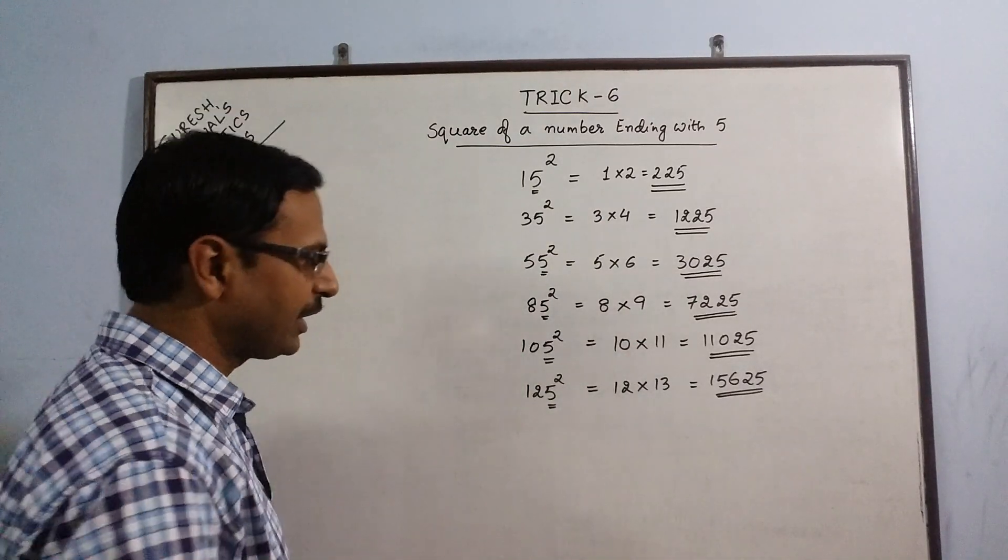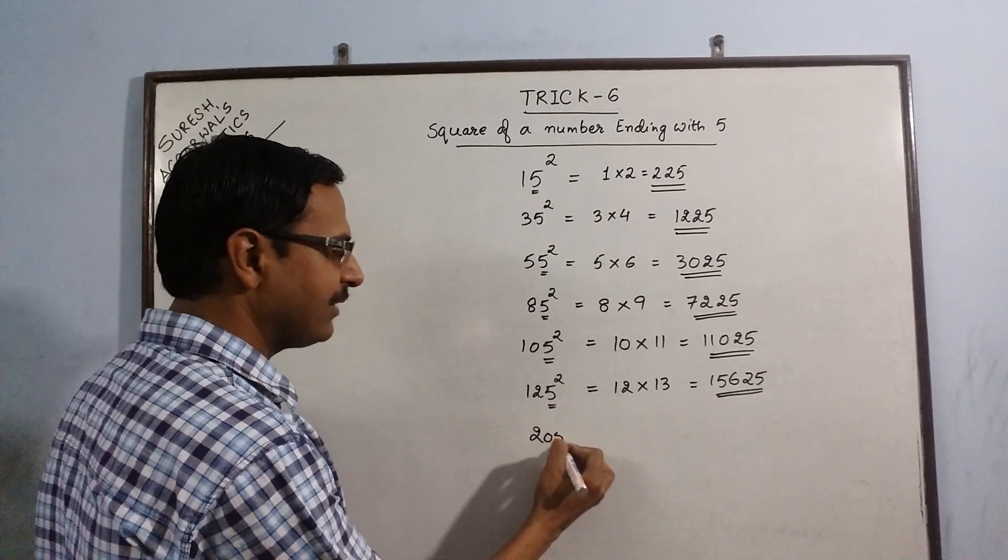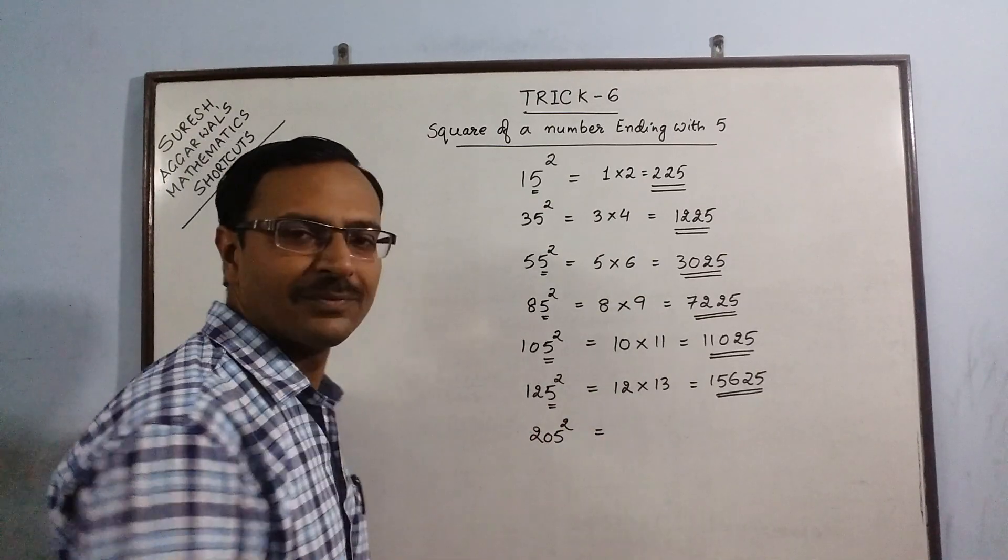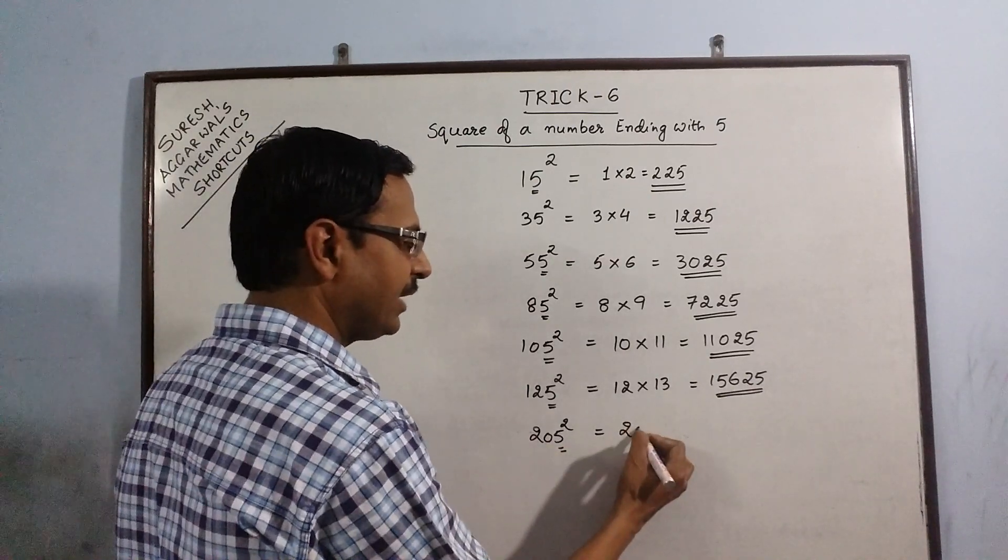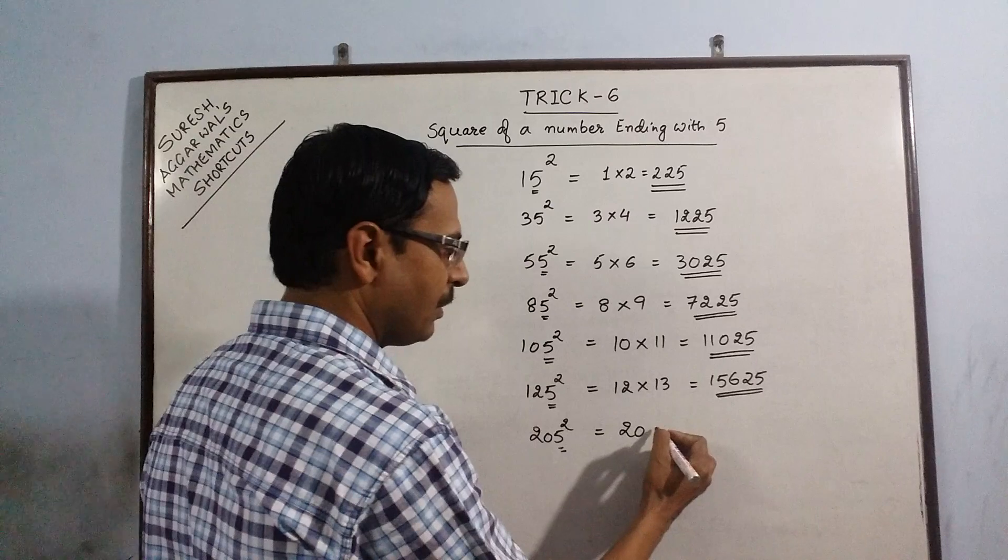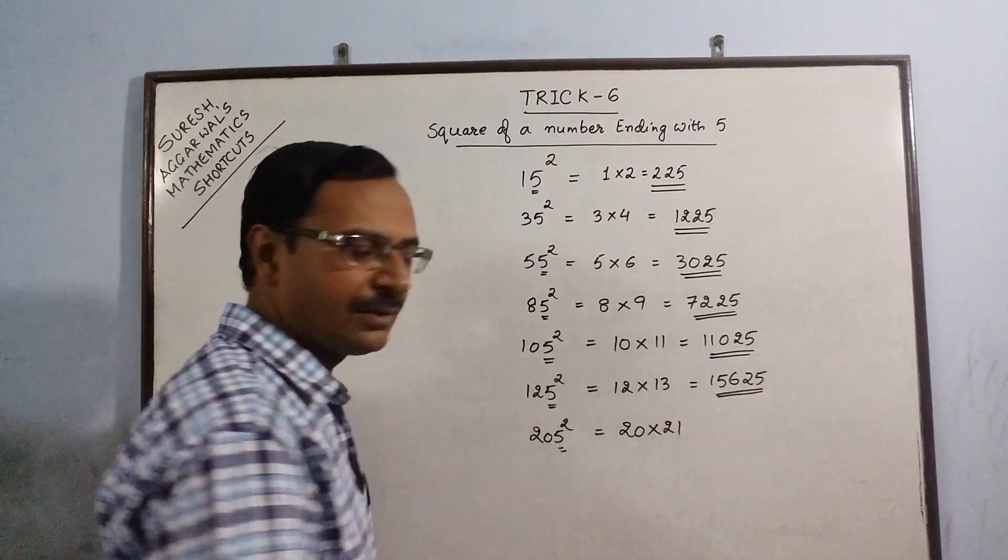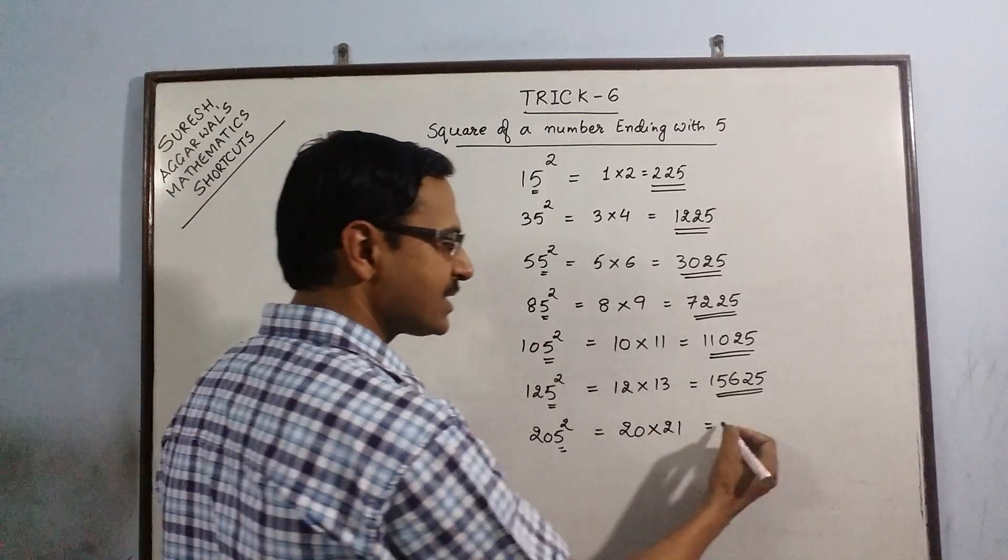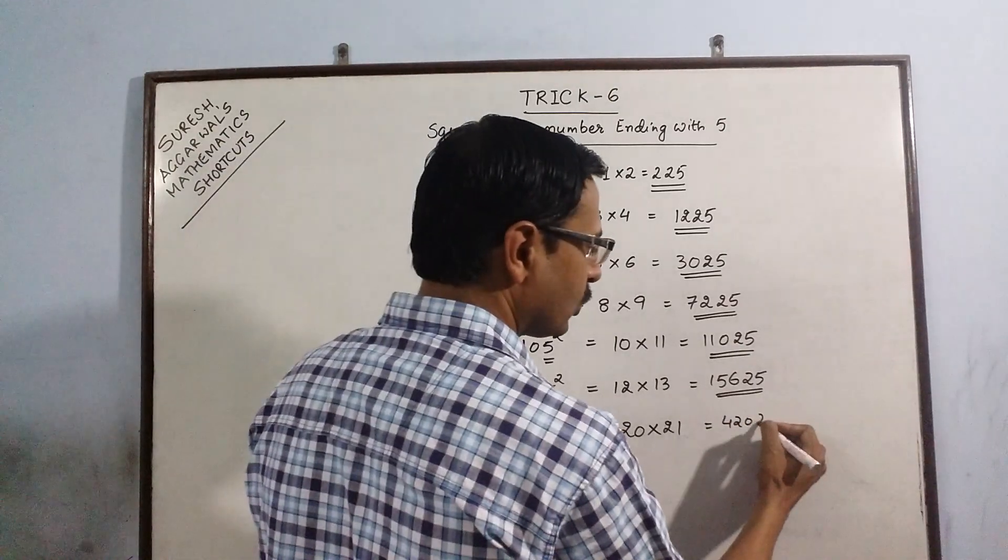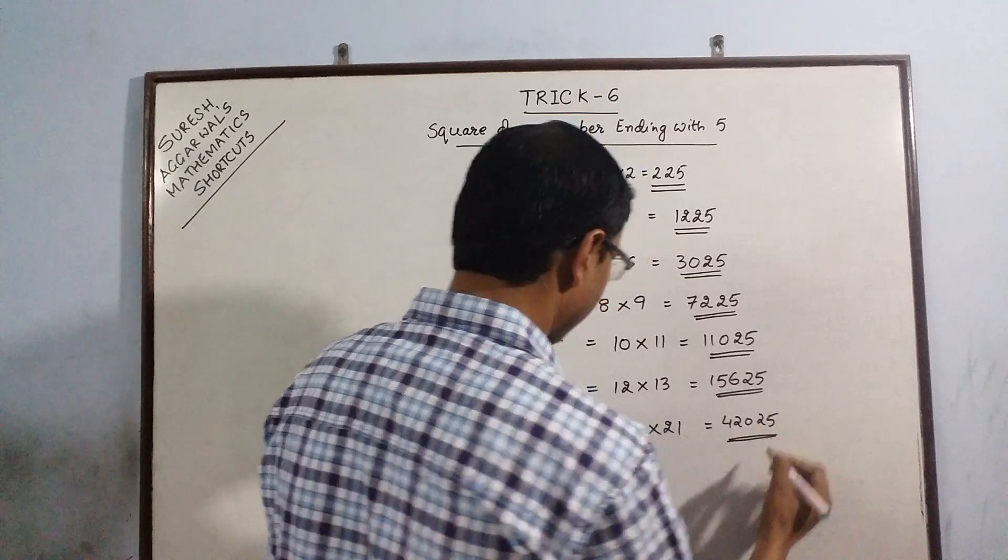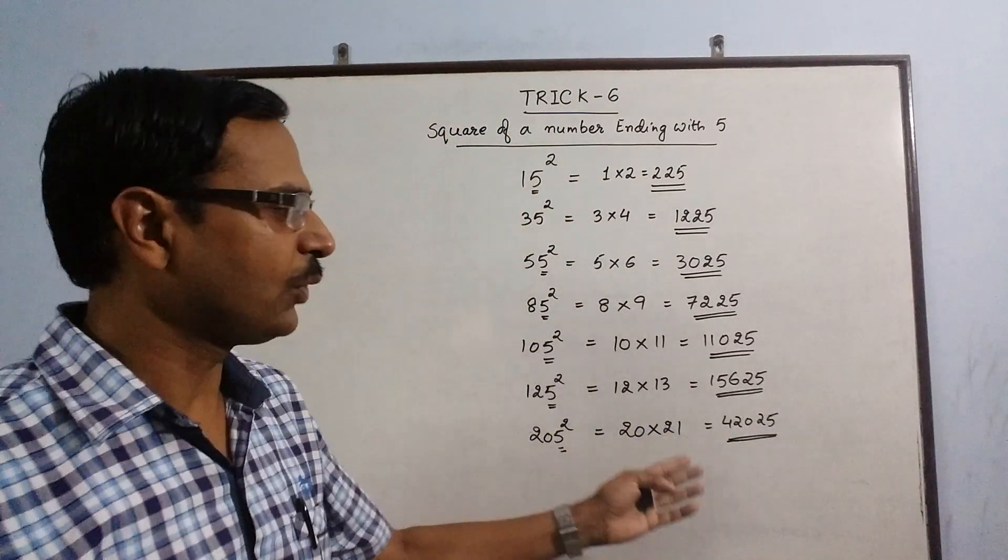More bigger numbers. Say we have 205 square. Forget the 5, we are left behind with 20. Multiply by the next number 21. 21 into 2 gives us 42, followed by 10. Just put 25. So the square of 205 is 42025.